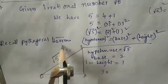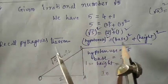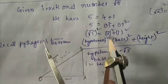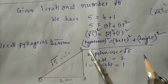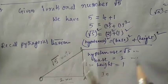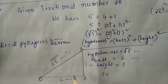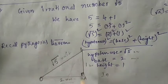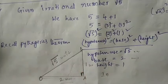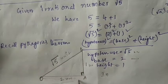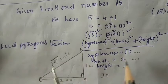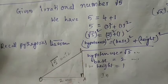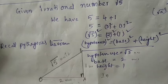Now, using the Pythagorean theorem: hypotenuse squared equals base squared plus height squared. Here the hypotenuse is equal to root 5, the base is equal to 2 units, and the height is equal to 1 unit. We take this right-angle triangle where OA is the base, AB is the height, and OB is the hypotenuse.